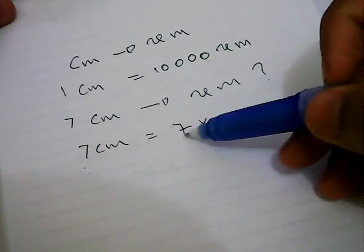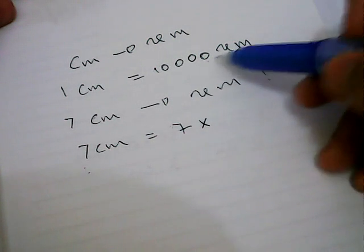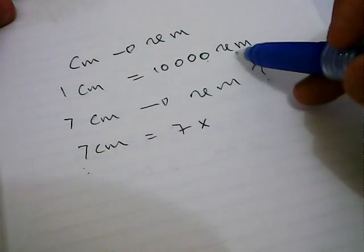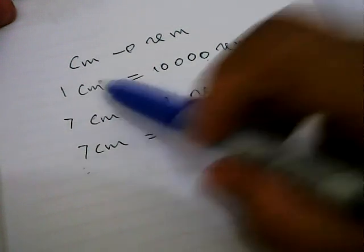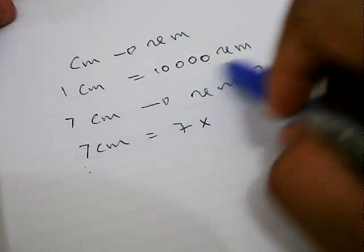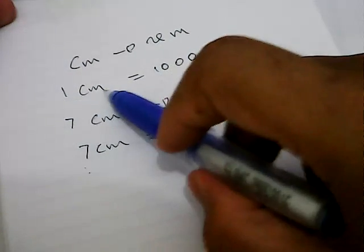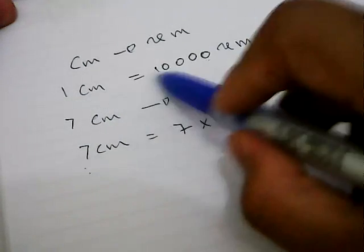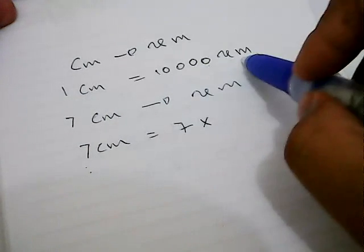Why do we need to multiply this seven with ten thousand? It's because you want to convert centimeters into micrometers. In this case, one centimeter is equal to one multiplied with ten thousand micrometers, so the result is ten thousand micrometers.